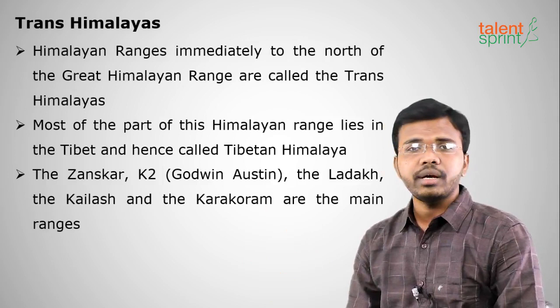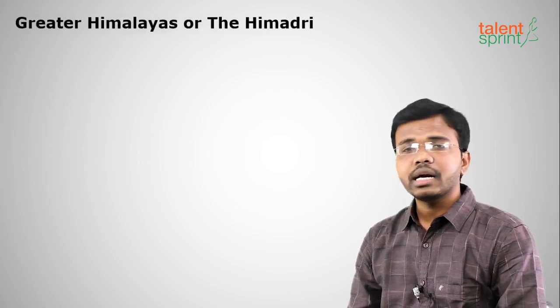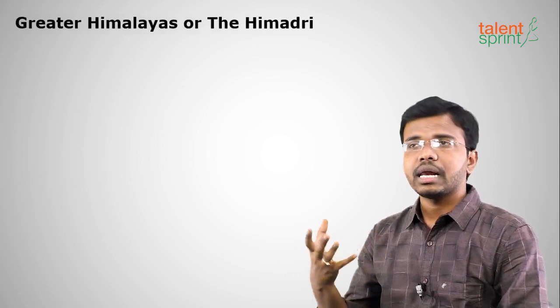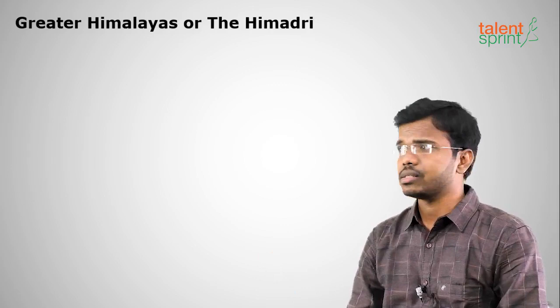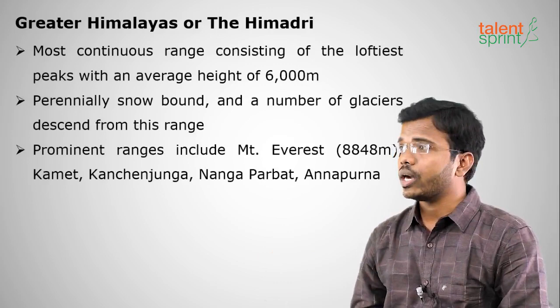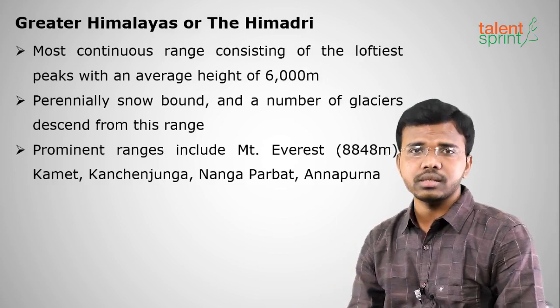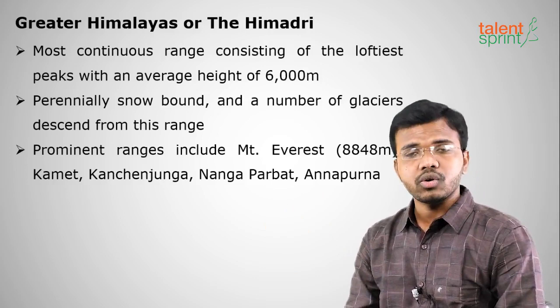The Greater Himalayas or Himadri lie to the south of the Trans-Himalayas. 'Him' means snow and 'alaya' means abode, so Himalayas literally means 'abode of snow.' The average minimum height of mountains here is 6000 meters, making this the home of all the highest peaks.